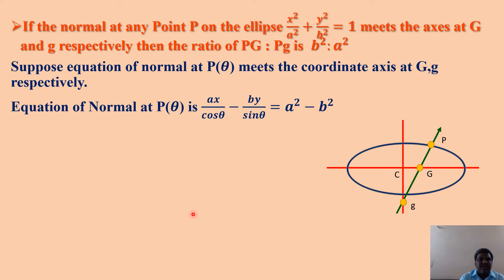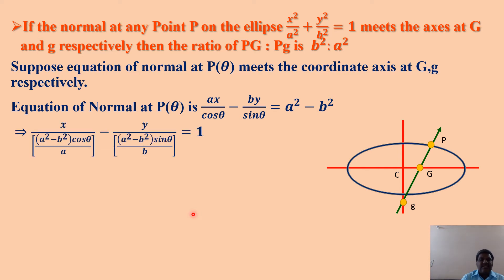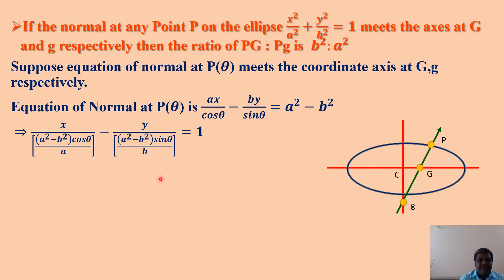The equation of normal at P(θ) is ax/cosθ − by/sinθ = a² − b². Writing this in intercept form: x/[(a²−b²)cosθ/a] − y/[(a²−b²)sinθ/b] = 1. Taking the minus into the denominator gives the intercept form x/a + y/b = 1. The x-intercept gives the coordinates of capital G and the y-intercept gives the coordinates of small g.